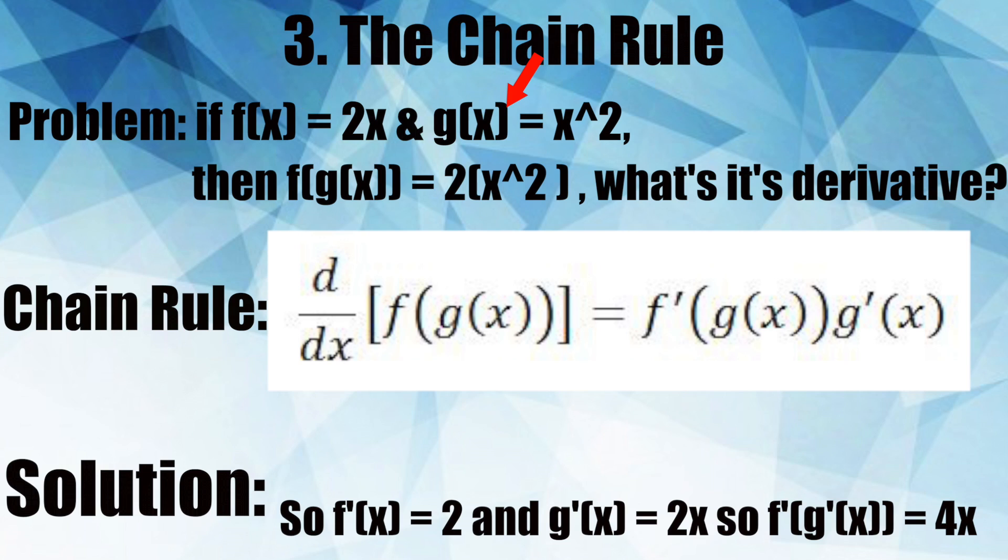Say you have some function f of x and another function g of x. Using them you form some composite function f of g of x. The chain rule states that the derivative of f of g of x is equal to the derivative of g of x times the derivative of f of x.